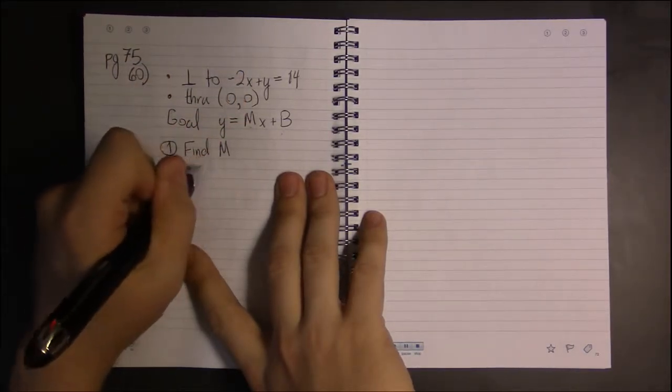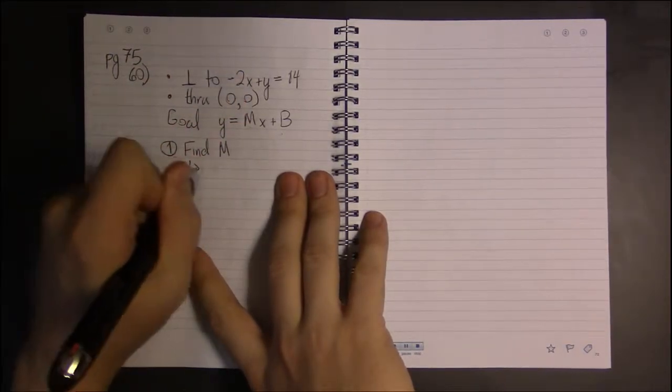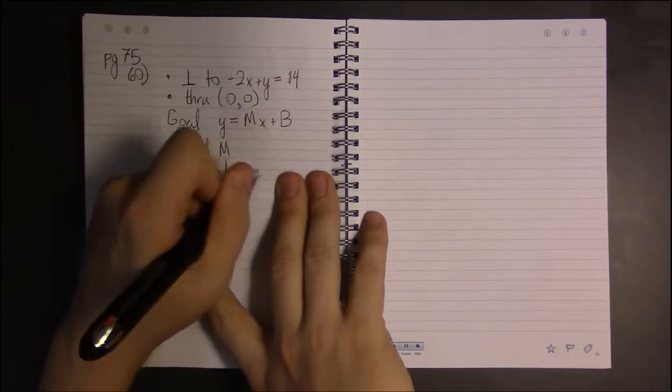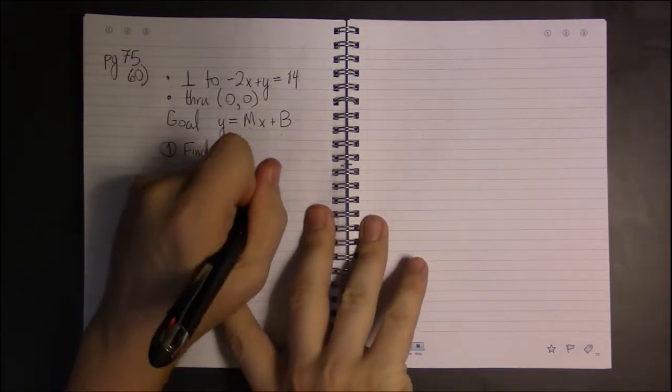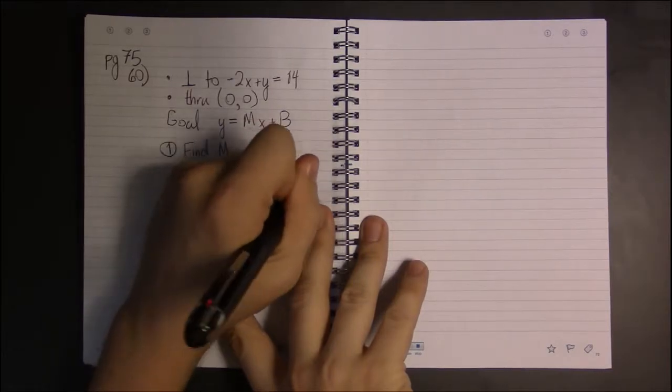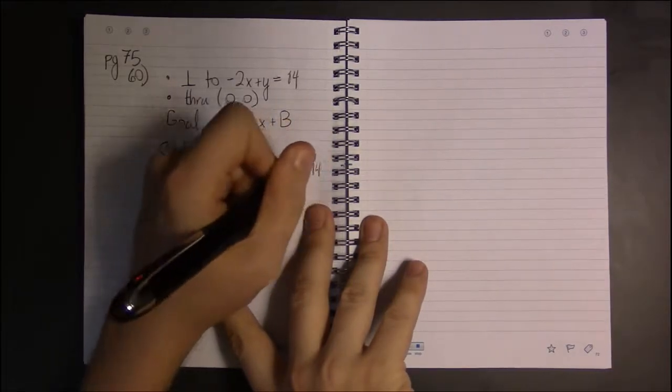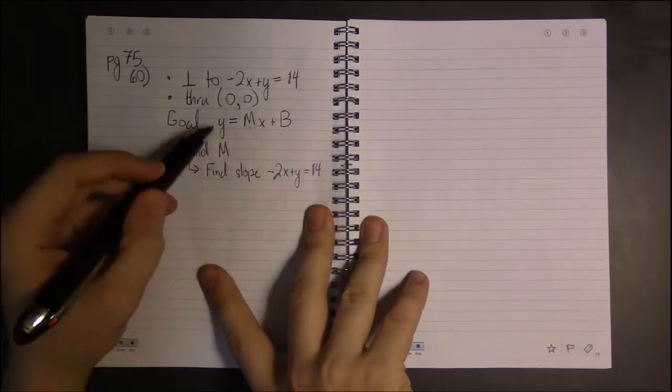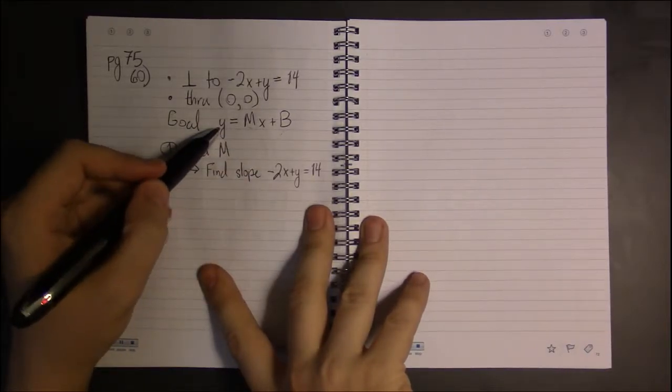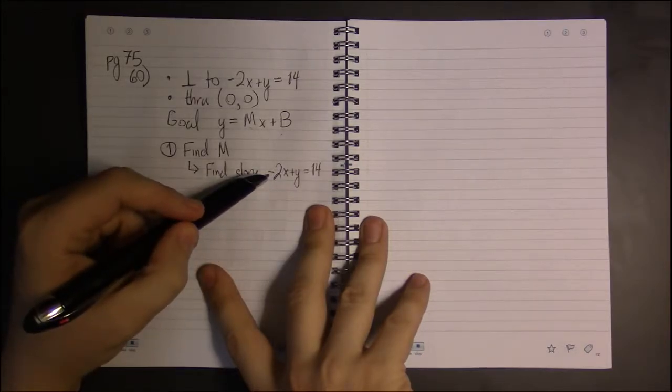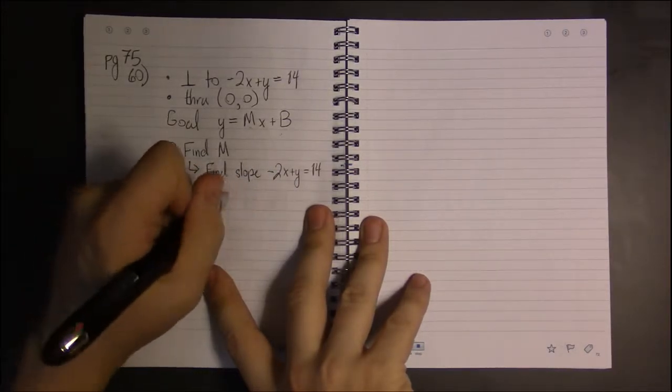To find the slope of our line, let's find the slope of this line: -2x + y = 14. Well, we want to write it in this form. So we want to get y by itself, which means we're going to be adding 2x to both sides.